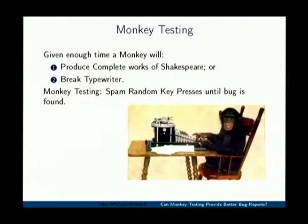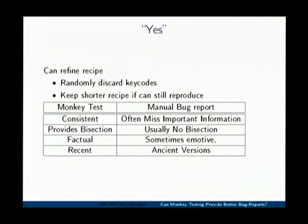When you do this, you probably end up with thousands and thousands of key presses needed to reproduce the bug. But we can randomly discard key codes, and if that shorter recipe still reproduces the bug, we can keep that shorter recipe and eventually end up with a very nice short recipe. This is a bit like genetic algorithms, except that the only mutation we need is to make the gene shorter.